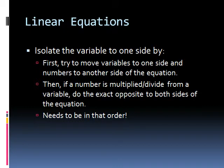So, let's start off with the most simplest type of equations, the linear equations. What you want to do is isolate the variable to one side. And you can do this by first trying to move variables to one side and numbers to another side of the equation. Then, if a number is multiplied or divided from a variable, do the exact opposite to both sides of the equation. Please note that it needs to be in this order because of the standard order of operations.